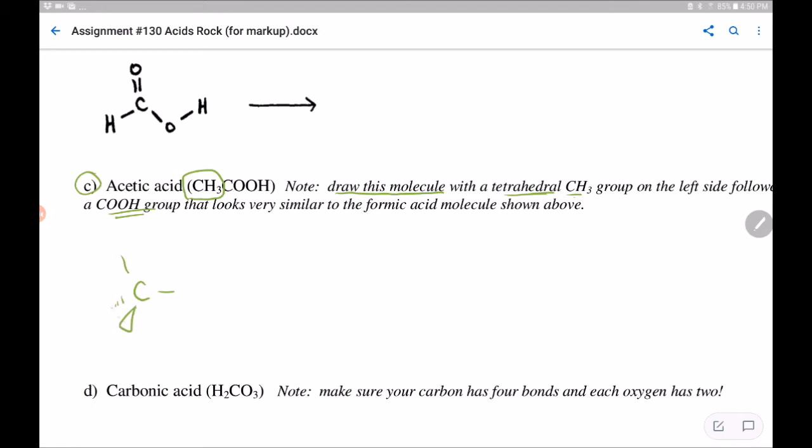This is how you draw a tetrahedron, if you've forgotten. This wedge means out of the plane toward the observer. The dashed line is behind the plane. Here's a CH3 ready to attach to the rest of the molecule, COOH.